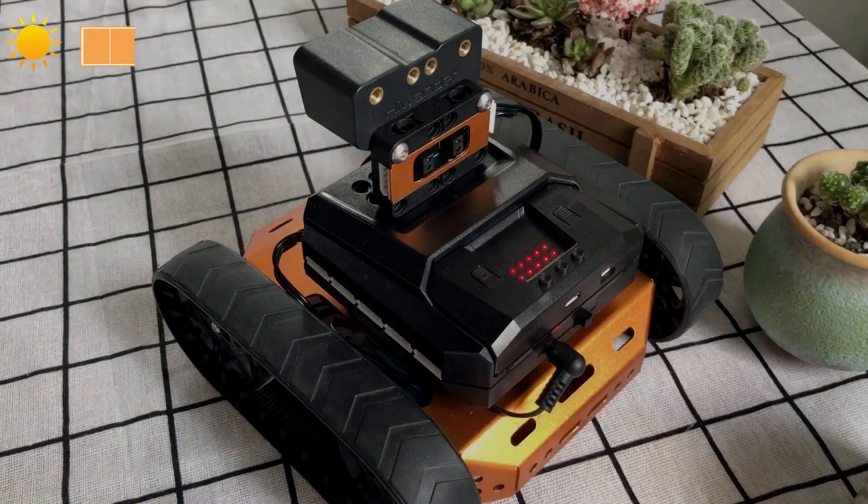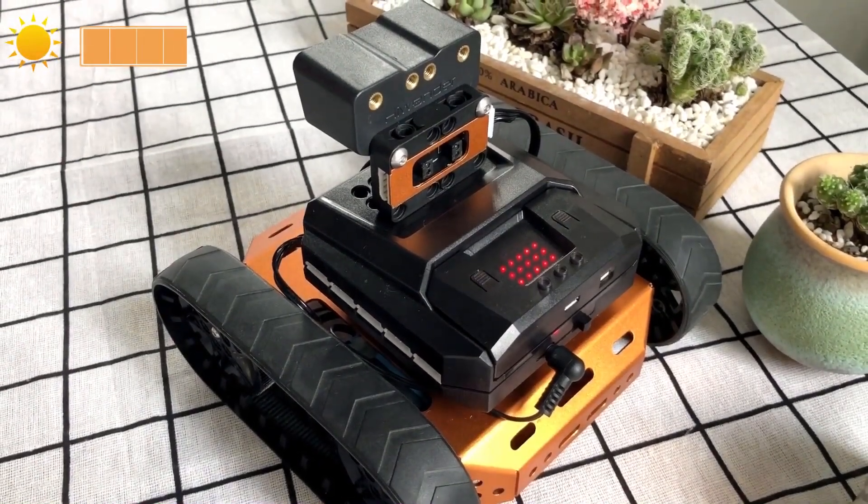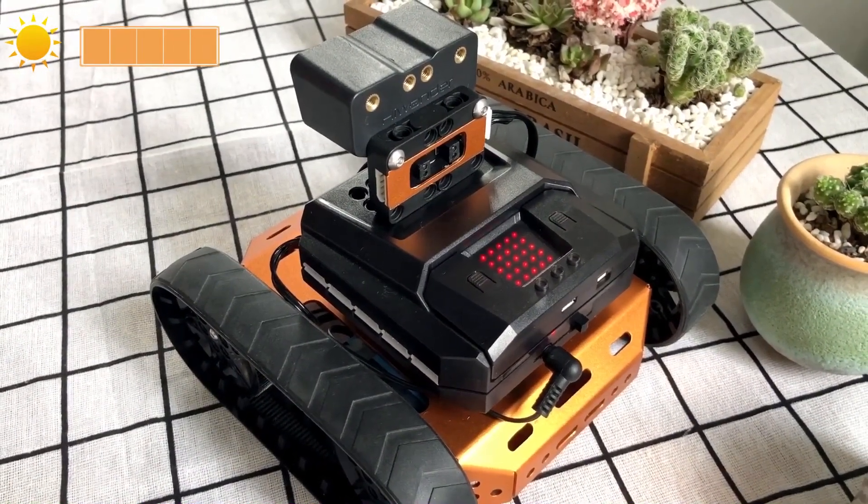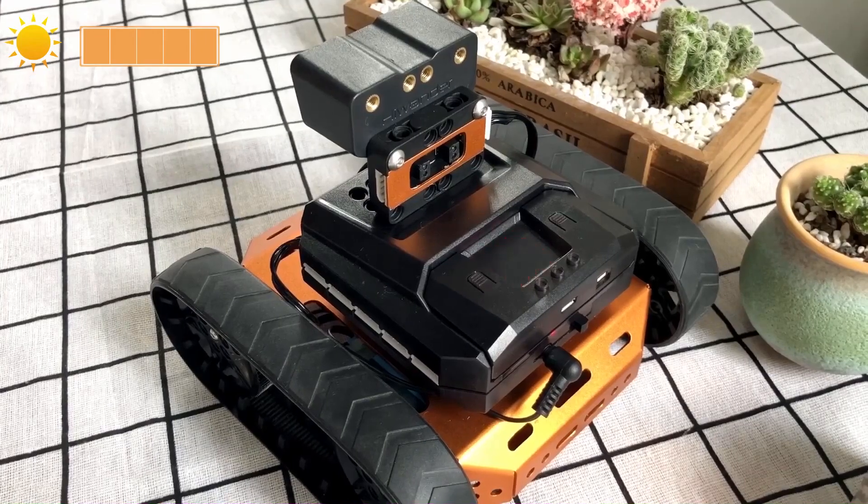Look, Qt is using the light sensor to sense the brightness of surroundings. Qt will move when the brightness comes to a certain value.